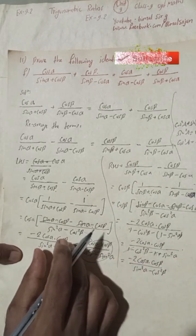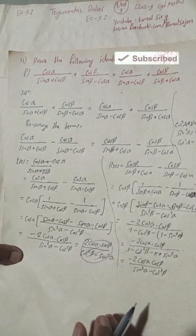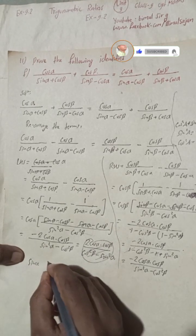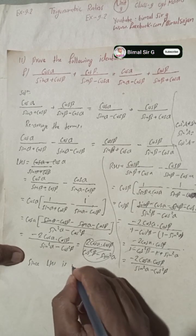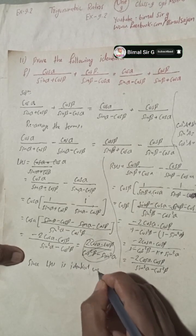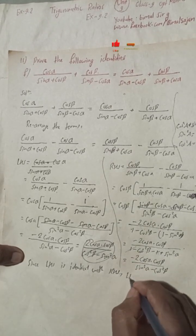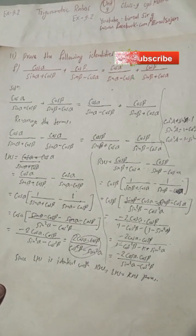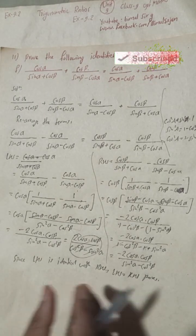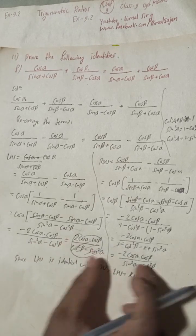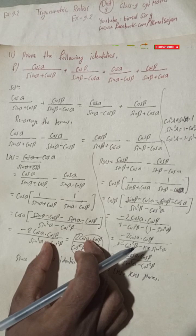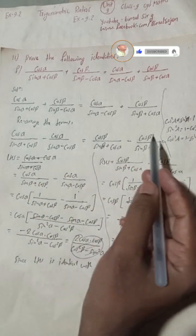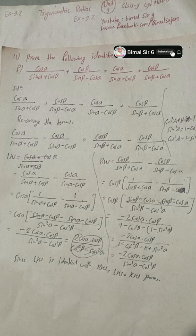Both LHS and RHS are identical, so we can write: since LHS is identical with RHS, LHS equals RHS, proved. Another approach: since both simplified expressions are the same, we can label the rearranged equations as equation one and equation two, and by shifting terms back, arrive at the original identity.